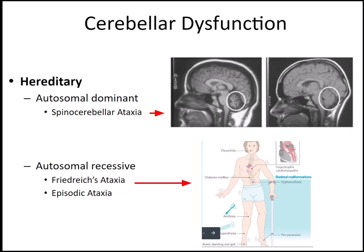Another autosomal recessive cerebellar condition is episodic ataxia — it's exactly what it sounds like. The ataxia comes and goes; it's not consistently present all the time. Sometimes it will be there, and other times it will not.